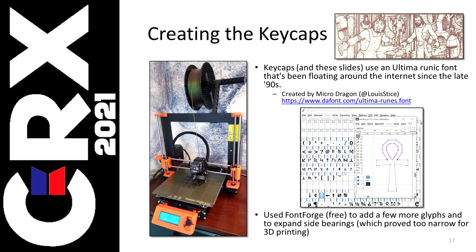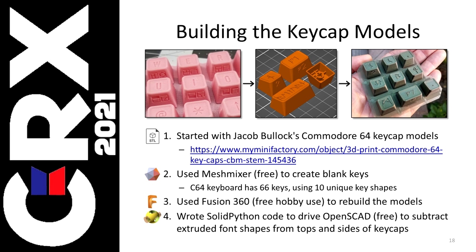On to the keycaps. The keycaps you saw in the Runic Commodore, as well as the runic symbols in these slides, all come from an Ultima Runic font that's been around forever — at least since the late 90s — created by MicroDragon. If you're in the UDIC group, you've undoubtedly used this font or been forced to read it at some point. I had to use FontForge, which is free software, to add a few more glyphs I needed on the keys and to make some changes because they were too close together when I was trying to 3D print them. The keycap models went through this workflow. I started with Jacob Bullock's Commodore 64 keycap models — those bubblegum-looking pink keycaps you see on the left. The Commodore keyboard has 66 keys with only 10 unique key shapes, so I only had to scrub it 10 times.